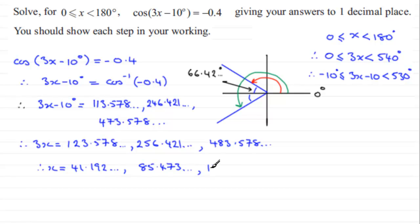Now we're told to give our answers to one decimal place, so if we do that x will equal 41.2 degrees for the first one. Next one will be 85.5 degrees, and the last one will be 161.2 degrees. And we'll just say here that we're doing all of the answers to one decimal place, 1 d.p.